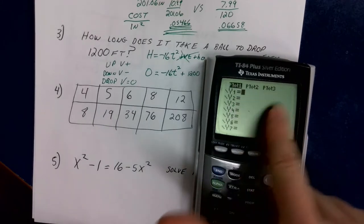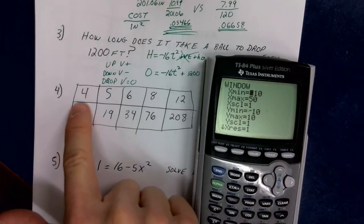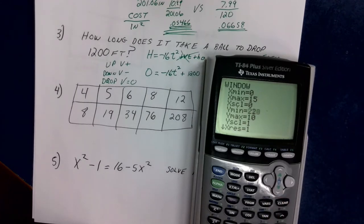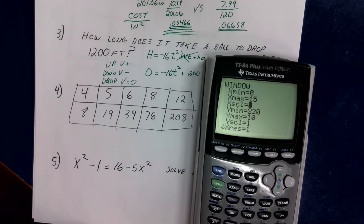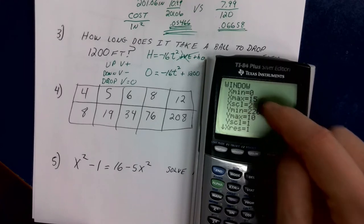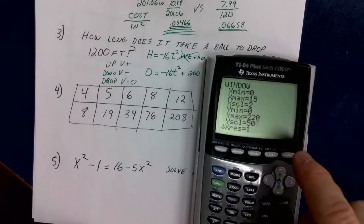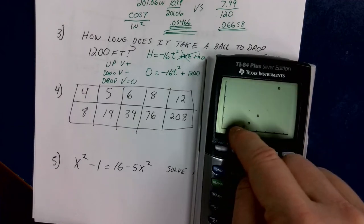I go to Y equals, make sure that's clear. My stat plot should still be on a scatter plot. I just need a window that matches this data — x's go from 4 to 12, so 0 to 15. Y's go from 8 to 208, so 0 to 220, x-scale 2, y-scale increments of 50. So graph. Is that a straight line? No — that's got some curvature. I don't know if that curvature is exponential, quadratic, or cubic.